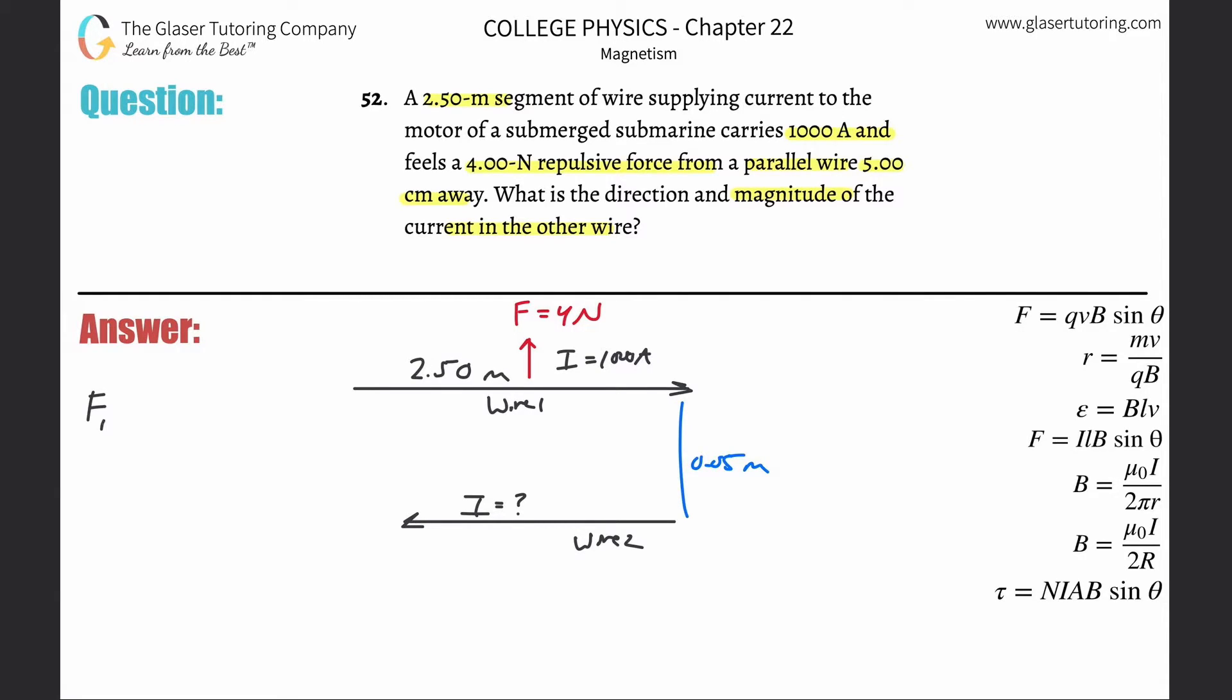So the force on wire 1 produced by wire 2 will equal the current flowing through the wire 1, multiplied then by the length of wire 1, multiplied now by the magnetic field produced acting on wire 1, which is really produced though by wire 2, and then multiplied now by the angle.